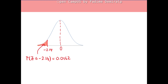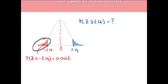Let's have a couple more examples. What's the probability that Z is greater than 2.14? If the question were greater than or equal to, we would have the same answer. We can use the fact that the normal distribution is symmetric at the center. The area in the left tail to the left of negative 2.14 equals the area in the right tail to the right of 2.14. Therefore, the answer is 0.0162.